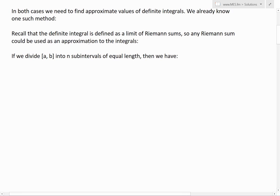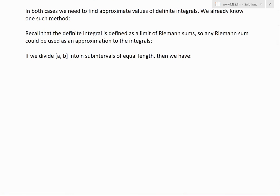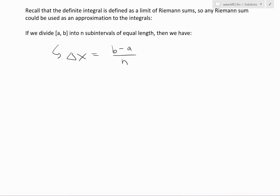If we divide the interval from a to b into n subintervals of equal length, we get delta x equals b minus a divided by n, averaging the length out to be the same across all subintervals.